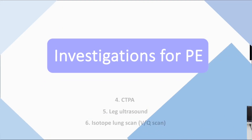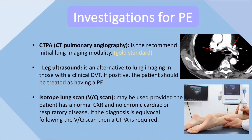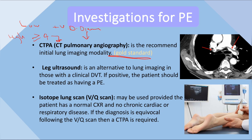CT pulmonary angiography is the gold standard for the diagnosis of pulmonary embolism. If the patient has a low probability Wells score with a positive D-dimer, you perform this test immediately. If the patient has a high probability — a Wells score of four or more — go directly to CT pulmonary angiography without doing a D-dimer.